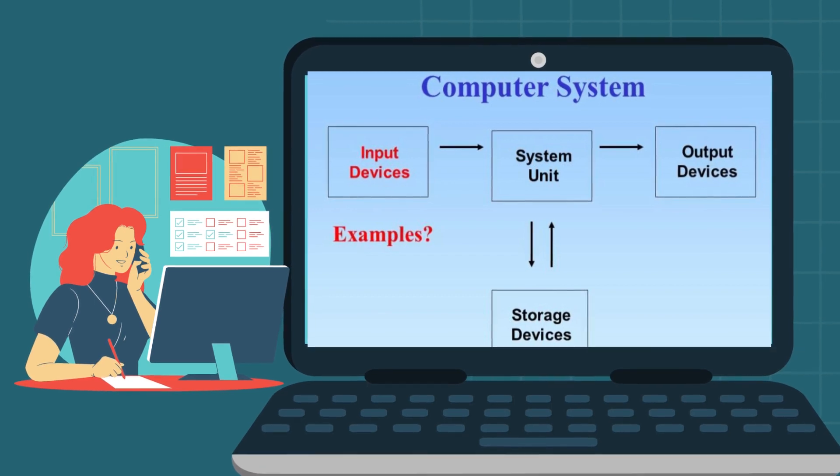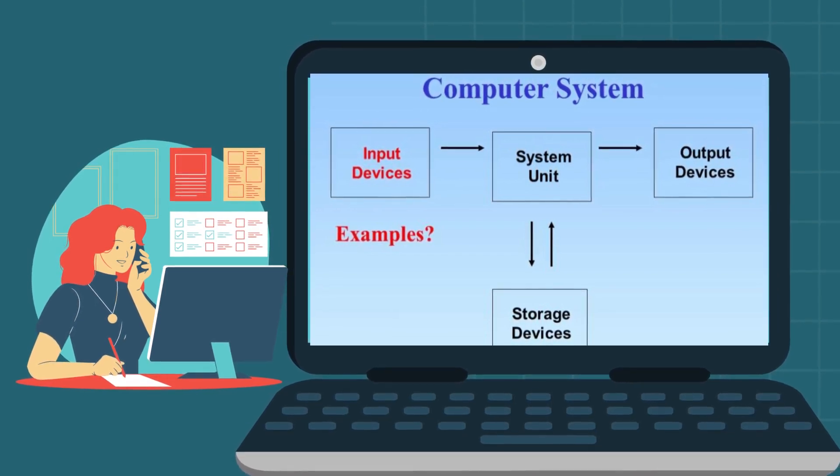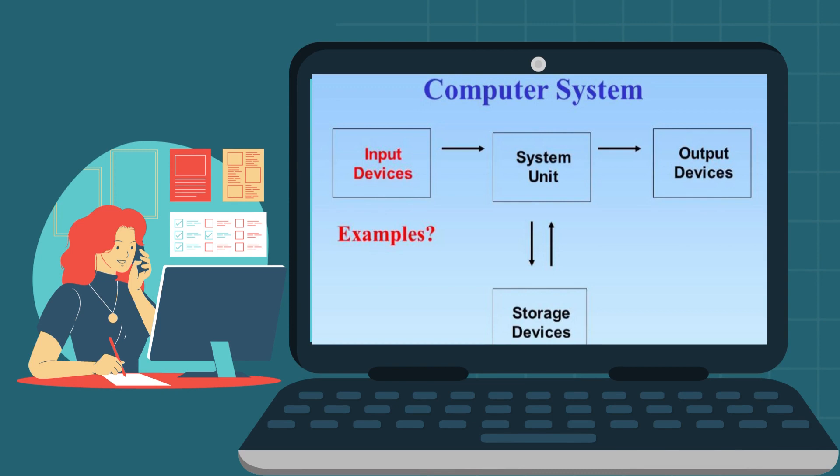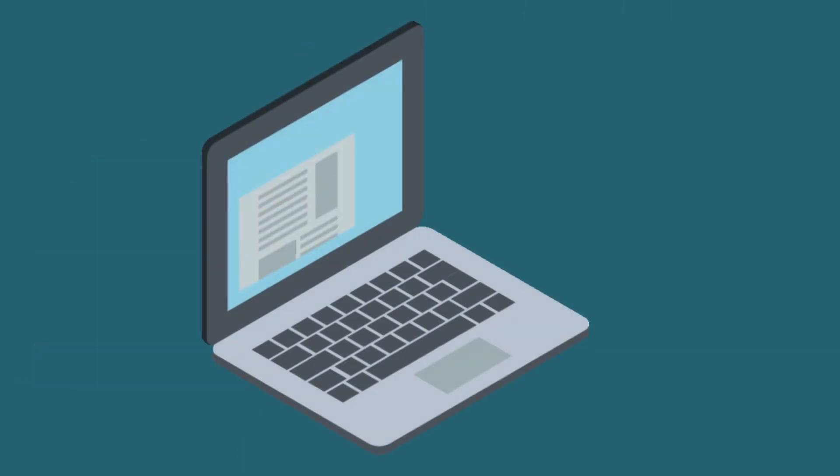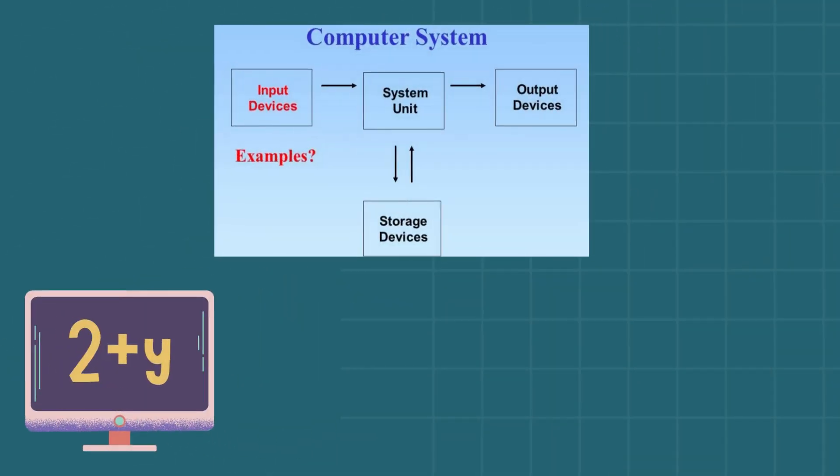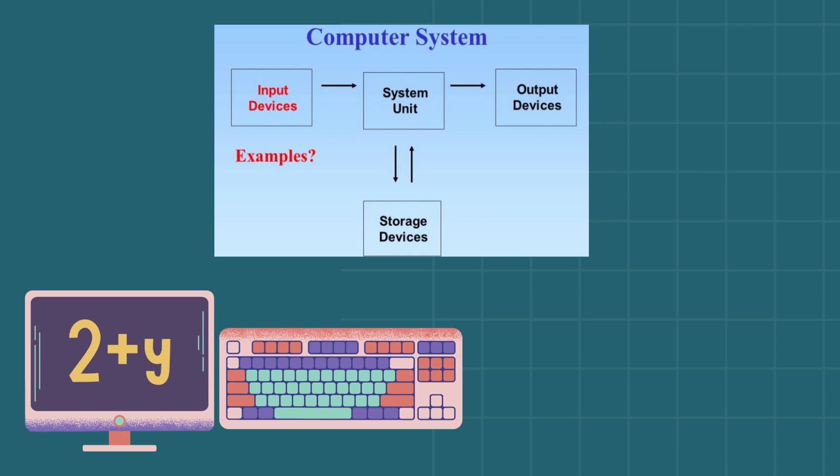Moving forward, the next figure explains what system unit is and how it is used. We see that our input devices, let's say a keyboard, is actually giving out a command. For example, I'm typing 2 plus Y in my computer. Let's say I have opened a calculator and I'm typing 2 plus Y and I want the desired result. So the input device that is helping me to do so is actually the keyboard. I type it in and then the system unit, which consists of lots of components, is processing the data and then giving me the desired result on an output device.